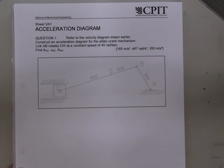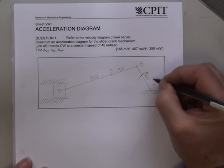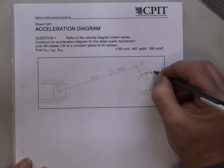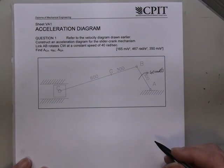This is the example for acceleration. This is using the velocity diagram that we used as the example earlier. So in this situation, link BA is rotating at 40 radians per second in a clockwise direction.